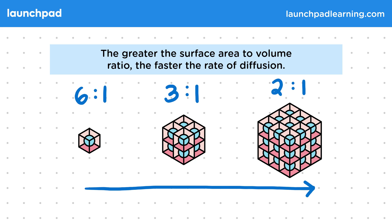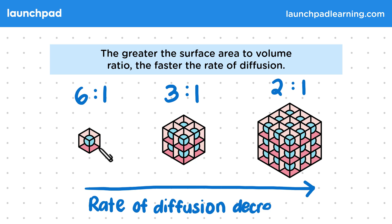Therefore, the rate of diffusion decreases as we move from our single celled organism to this multicellular organism. For your exam, you need to know that single celled organisms have a relatively large surface area to volume ratio.